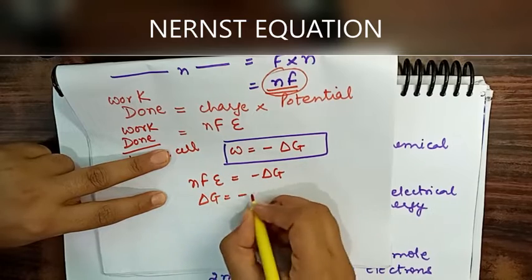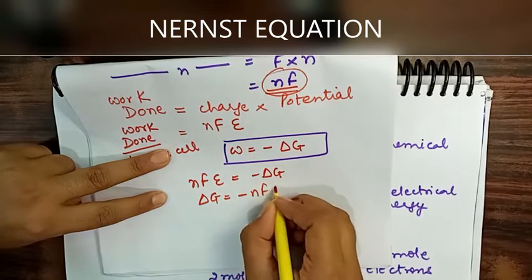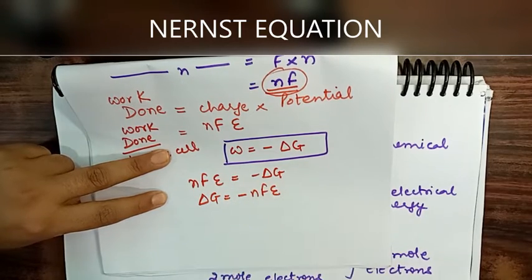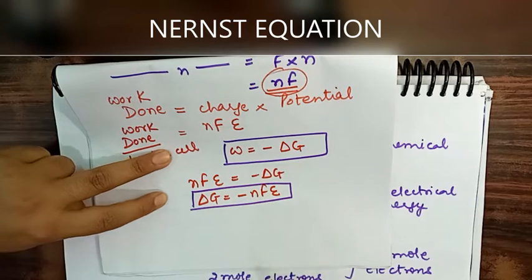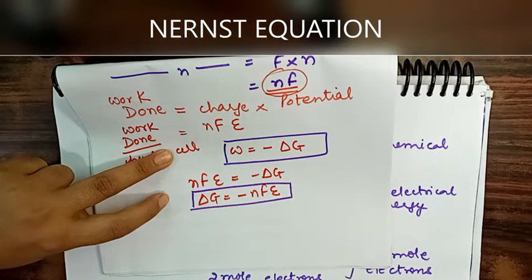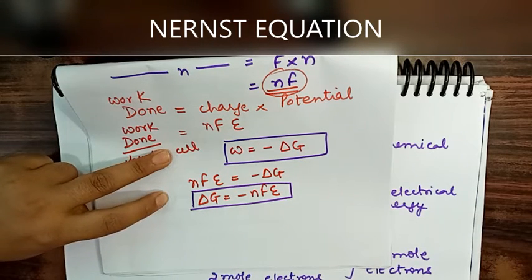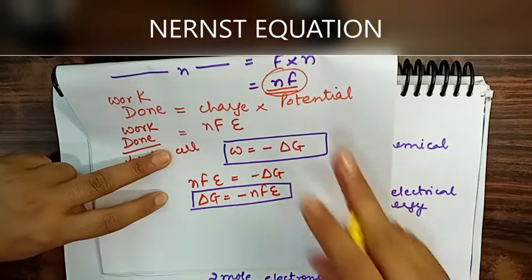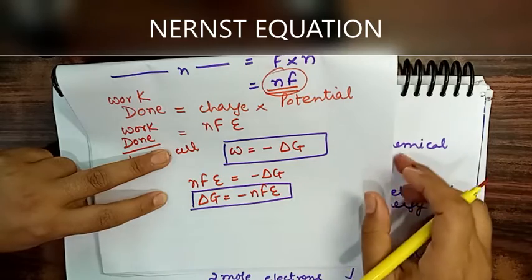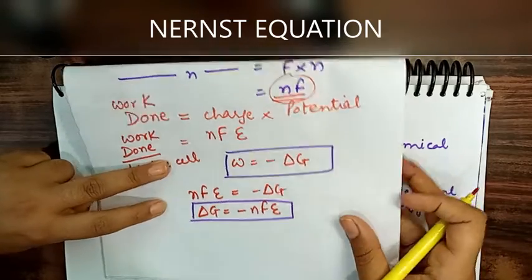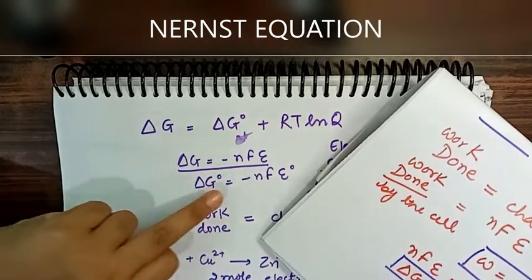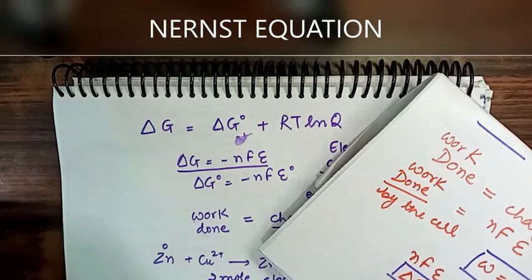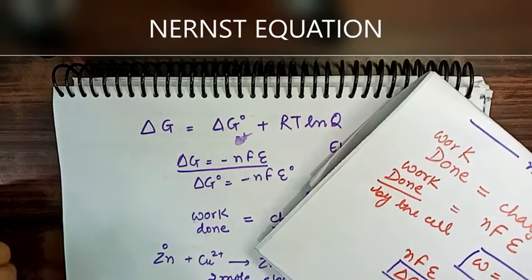Therefore, ΔG = -nFE. This is the direct relationship between free energy and electrode potential, and it is also used in numerical problems. Under standard conditions, ΔG° = -nFE°.